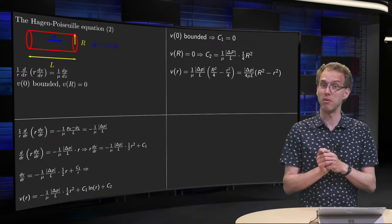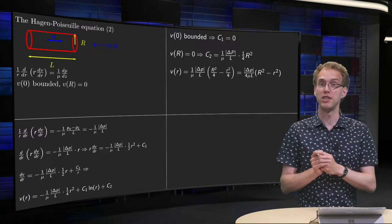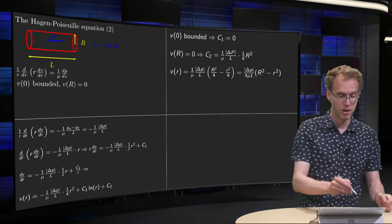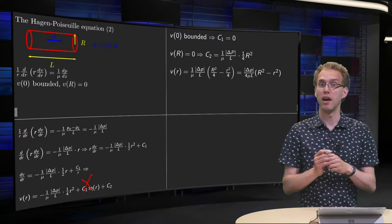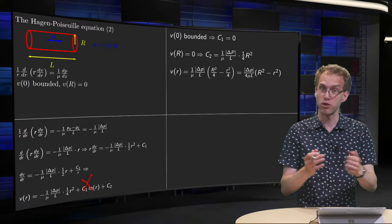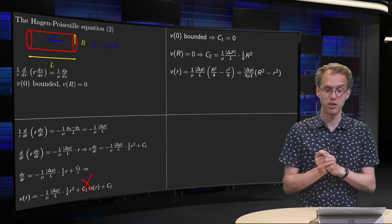First of all, we use that V of 0 is bounded. Well, if you plug 0 in the log, it's going to blow up, so that means that this term has to cancel out. C1 has to be 0, otherwise the term will blow up, we don't want that, so C1 is 0.